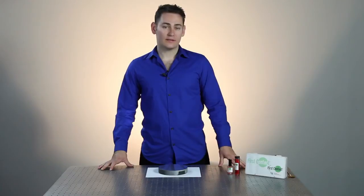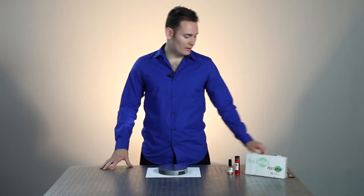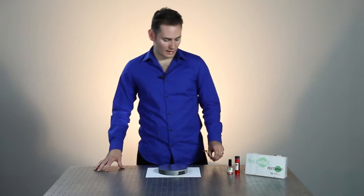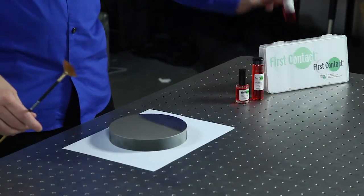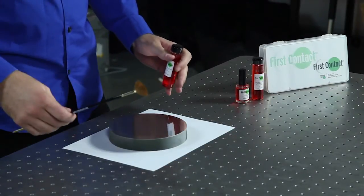For larger optics it's a lot easier to apply First Contact Polymer with a larger brush that you can get. You apply the polymer to the surface, you pour it on, and then spread it out.